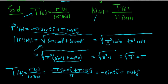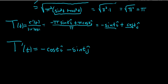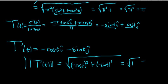The derivative of T(t): the derivative of −sin(t) is −cos(t), so T′(t) = −cos(t) î − sin(t) ĵ. Now the magnitude: √((−cos t)² + (−sin t)²) = √(cos²t + sin²t) = √1 = 1.